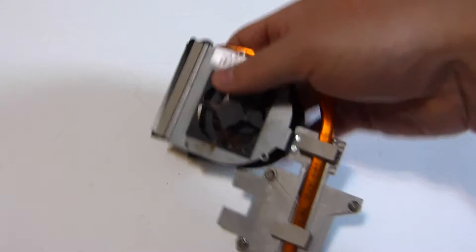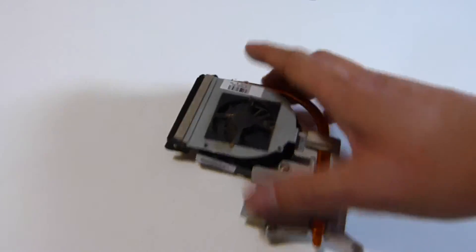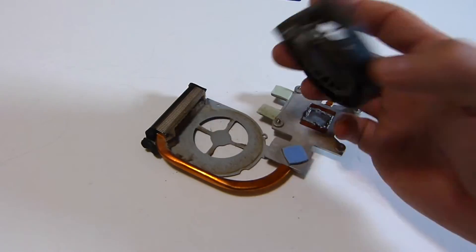There's a couple screws on the actual fan that attach it to the assembly. Let's see if we can get a focus here. A couple screws right here, here, and here. Taking those off and finally the fan will come off.